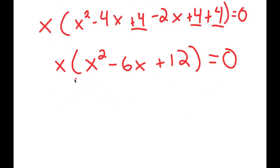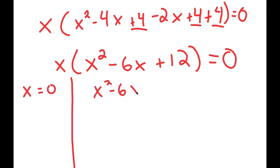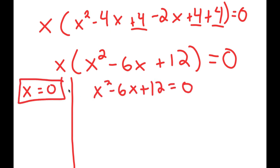From here this gives me two equations. I get x is equal to 0, and I get x² minus 6x plus 12 is equal to 0. So x equals 0 — this is already a solution.